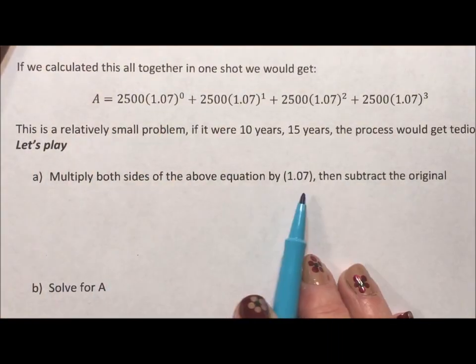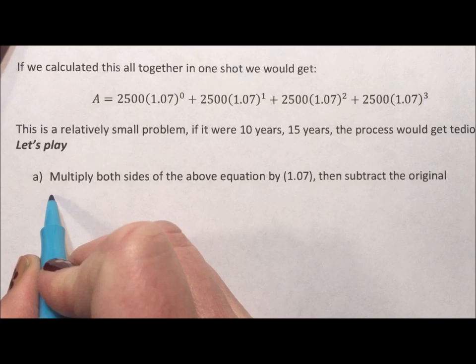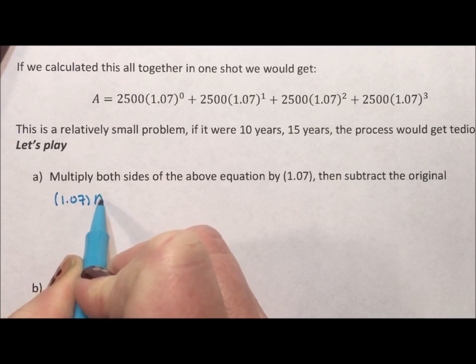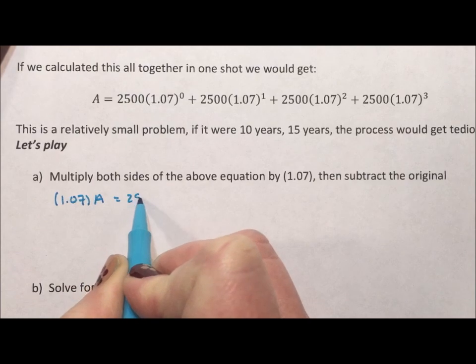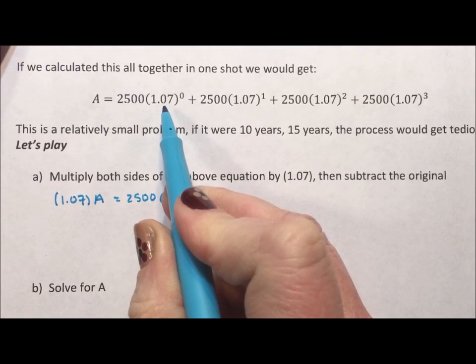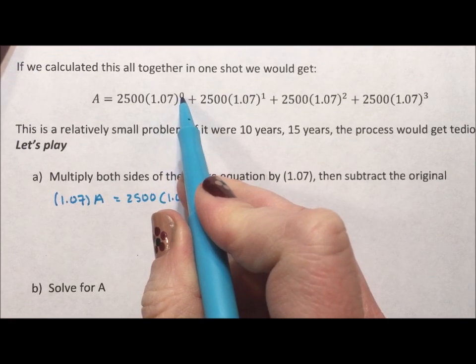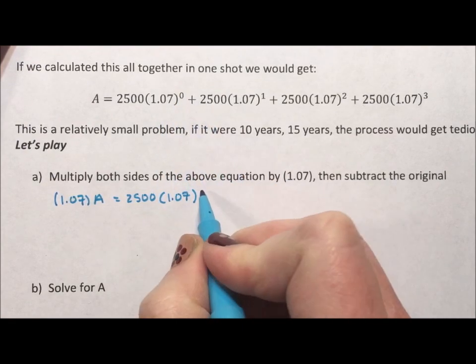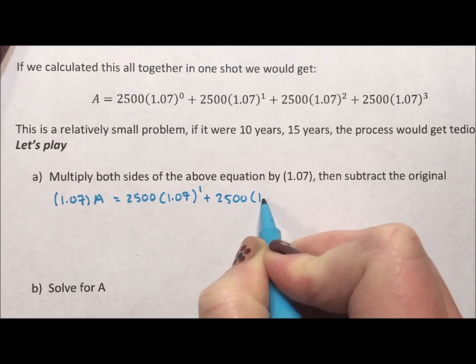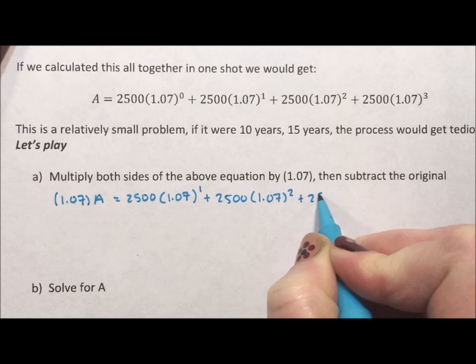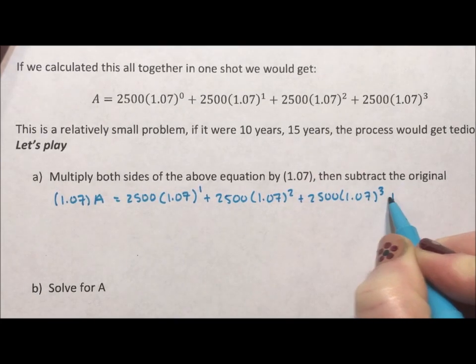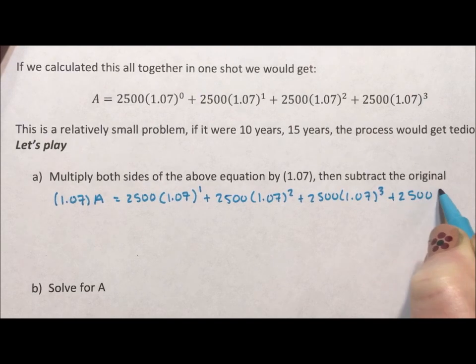The first thing I want to do is I want to multiply both sides by this 1.07. So I have 1.07 times A equals 2,500 times 1.07. Now when you multiply 1.07 to another 1.07, you just increase the exponent by 1. So the 0 becomes 1, 2,500. The 1 becomes 2, 2,500. The 2 becomes 3, 2,500. And the 3 becomes 4.